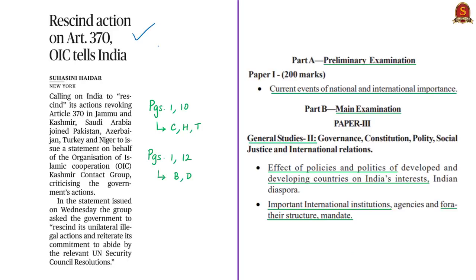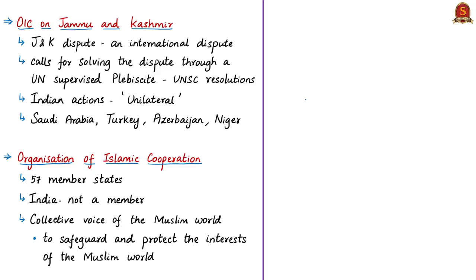The second news article is about the stand of the Organization of Islamic Cooperation (OIC). Recently, on the sidelines of the 74th session of the UN General Assembly, the contact group of OIC on Jammu and Kashmir held a ministerial meeting. In this meeting the OIC contact group called on the international community to accelerate efforts to help the people of Jammu and Kashmir achieve their legitimate rights.